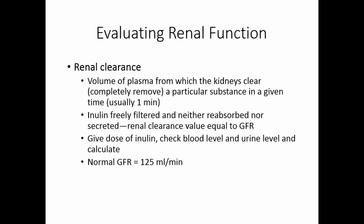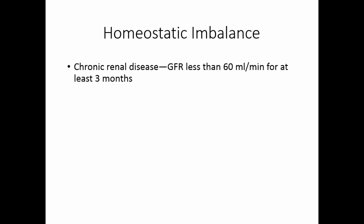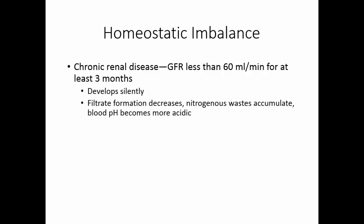A normal glomerular filtration rate is 125 milliliters per minute. Chronic renal disease occurs when the glomerular filtration rate is less than 60 milliliters per minute for at least three months. This develops very slowly and silently — there are no real symptoms. Filtrate formation decreases, nitrogenous wastes accumulate in the blood, and the blood becomes more acidic as the blood pH cannot be controlled by the kidneys. Common causes are diabetes mellitus and hypertension.